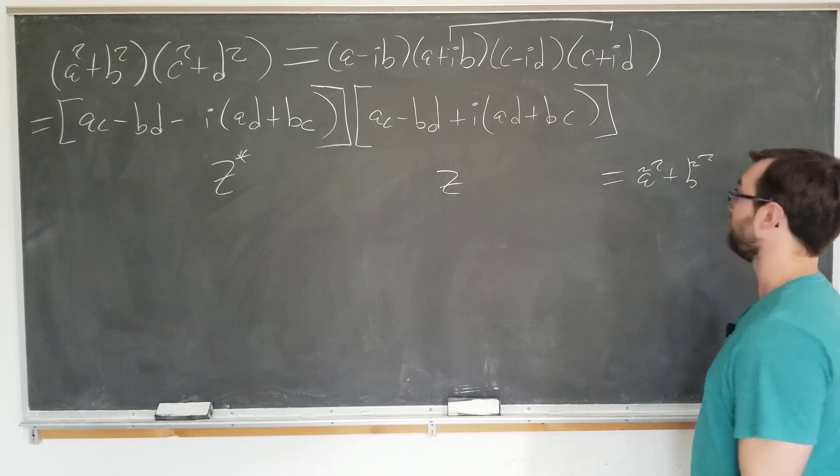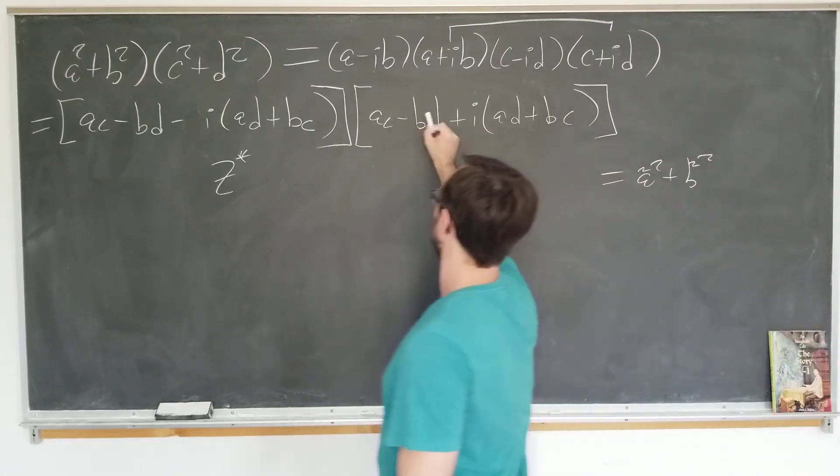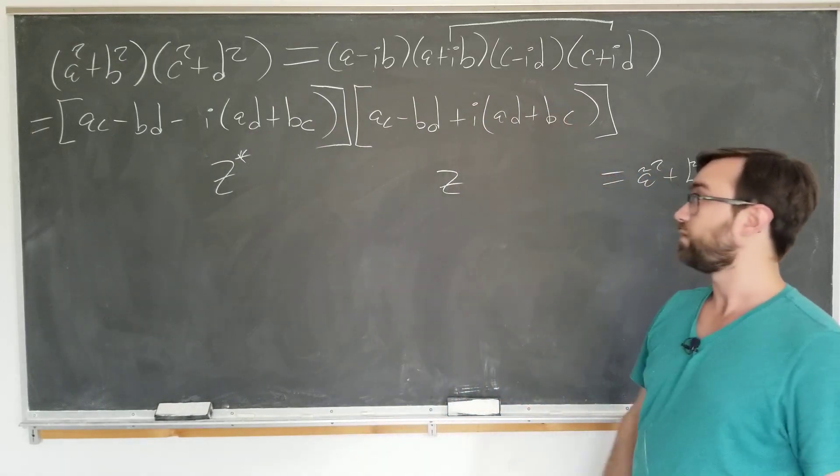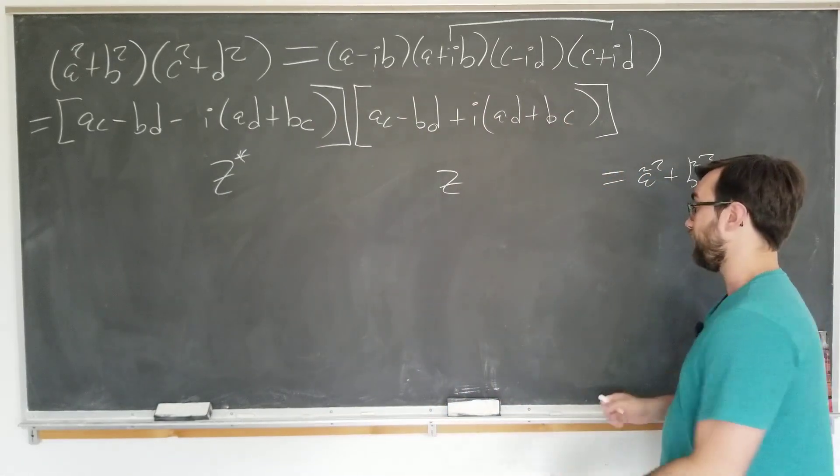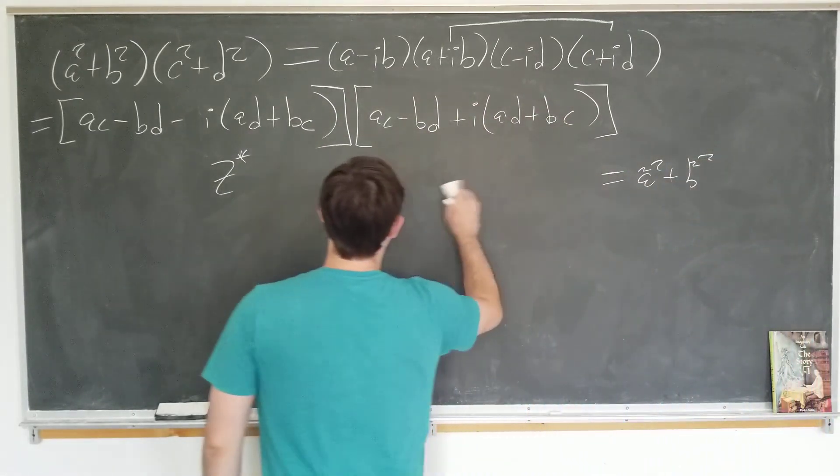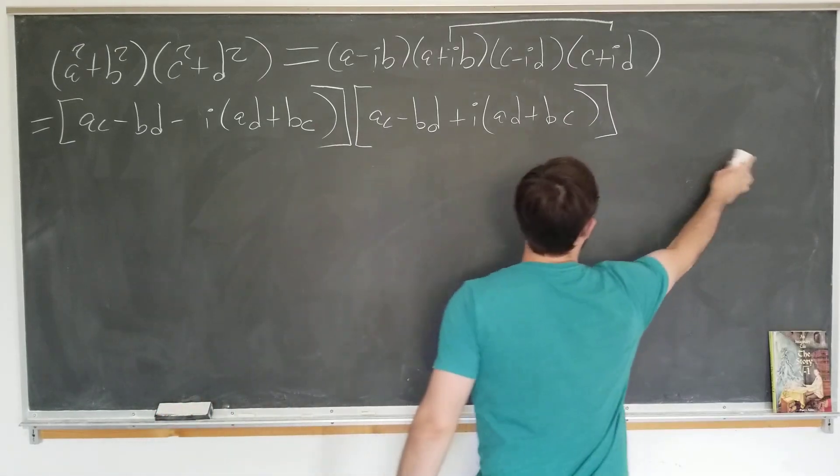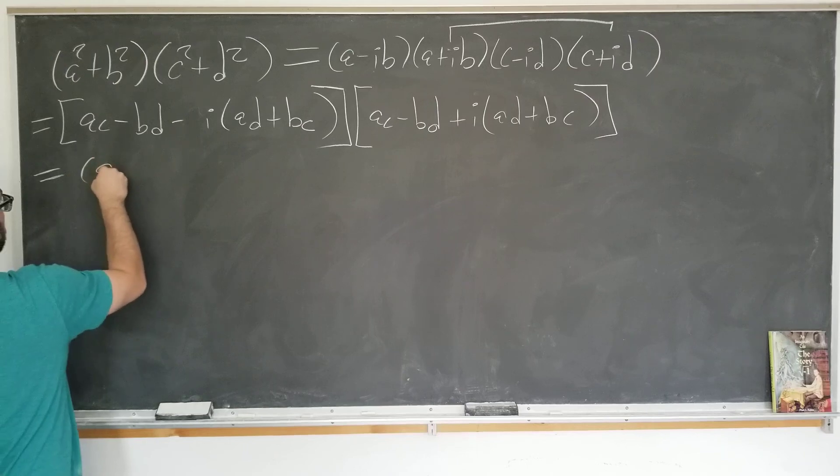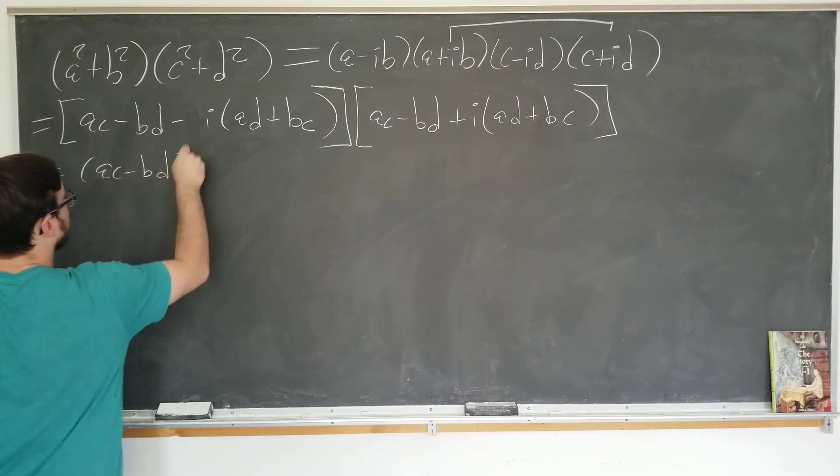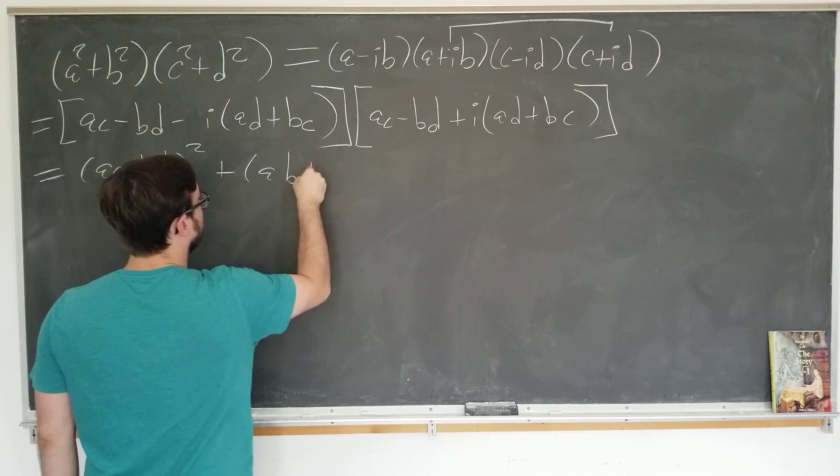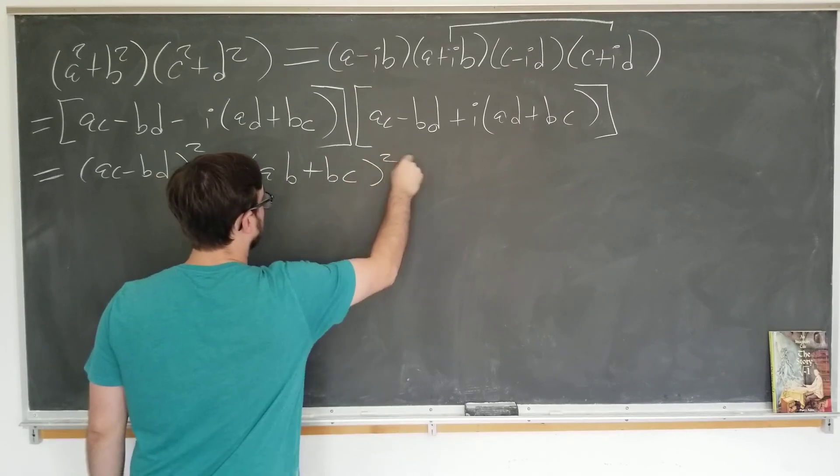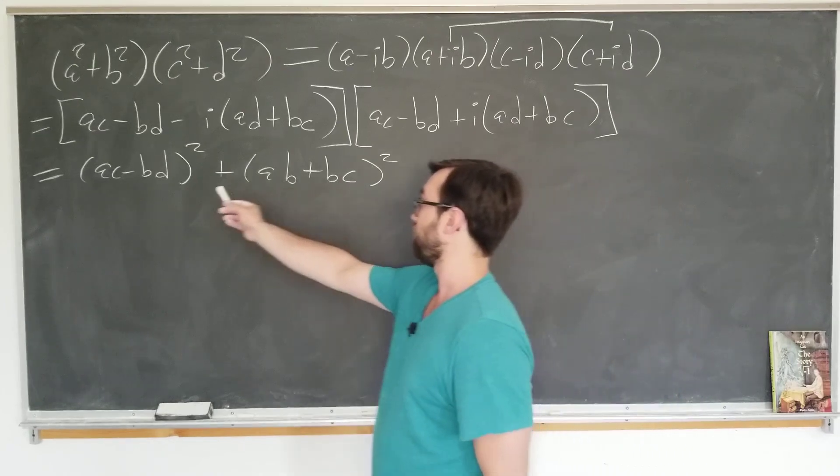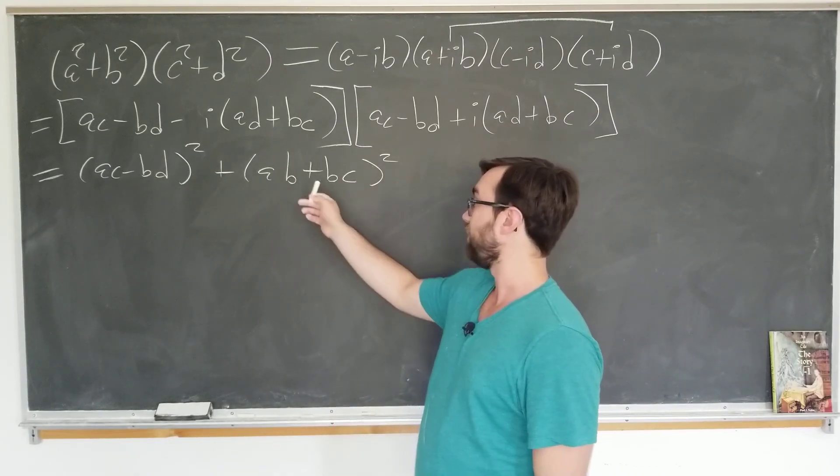But these are not the normal a's and b's. These are this being a and this being b. So we can immediately write this down without actually multiplying out all the terms. This is simply ac minus bd squared plus ad plus bc squared. So actually we have the first solution. We have the first u1 and v1 here.